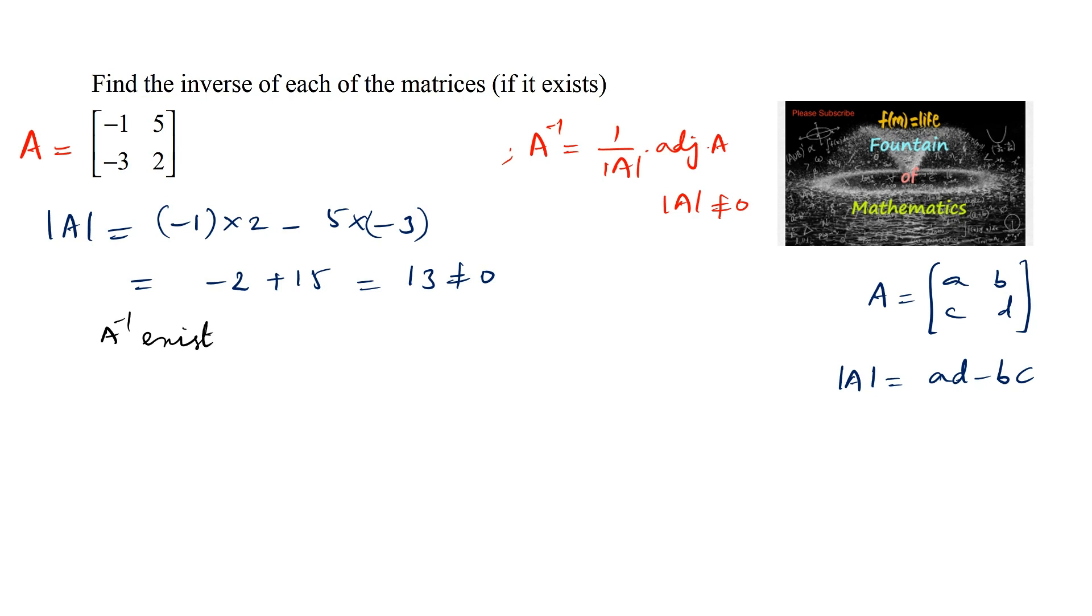Now A inverse is equal to 1 upon delta into adjoint of A. Let's find the adjoint of A. For a matrix A, B, C, D, the adjoint of the matrix is given by